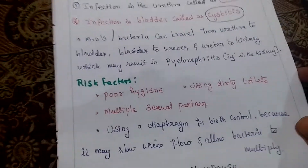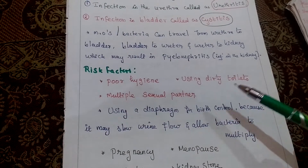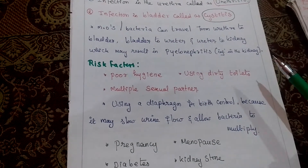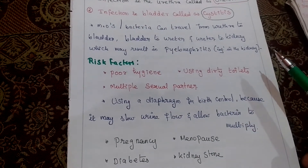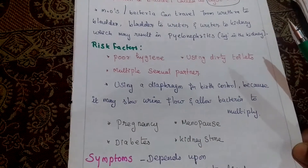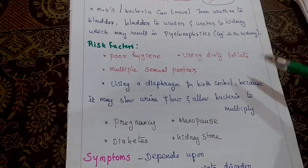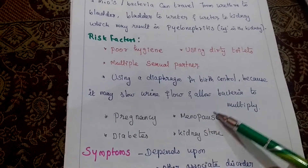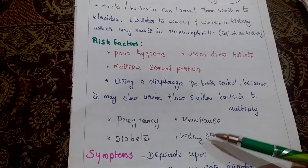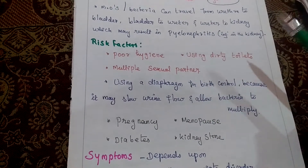Risk factors for UTI include poor hygiene, using dirty toilets, multiple sex partners, using a diaphragm for birth control (because it may slow urine flow and allow bacterial multiplication), pregnancy, menopause, diabetes, and kidney stones.